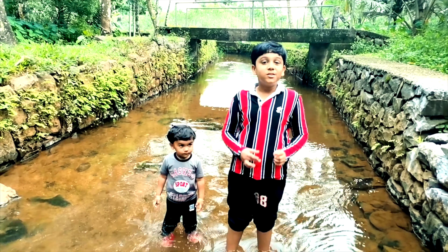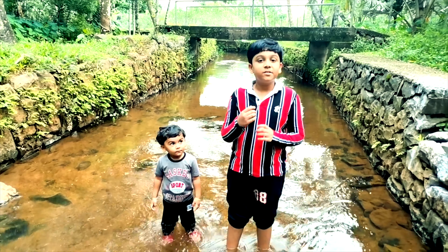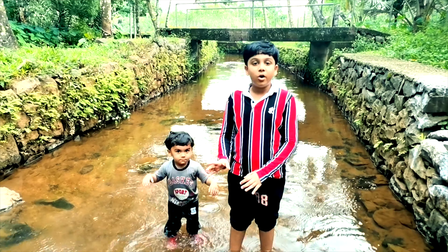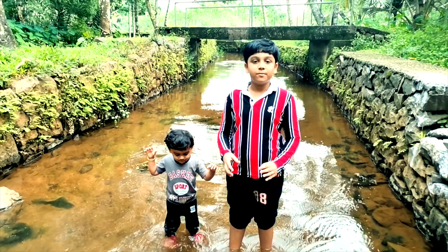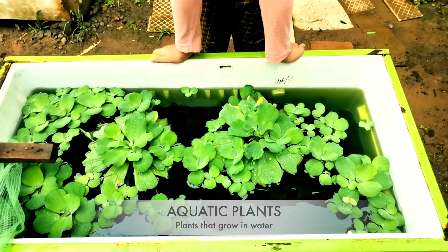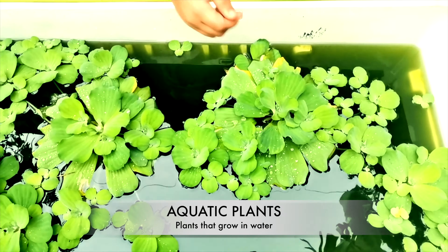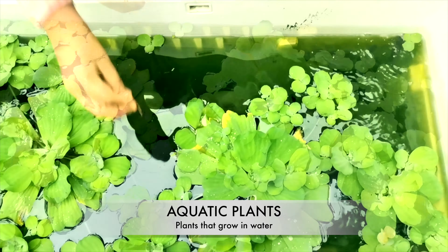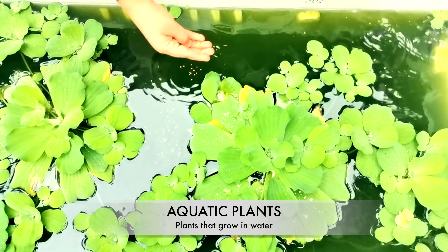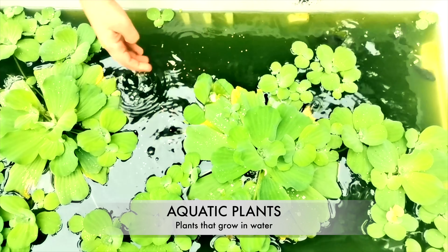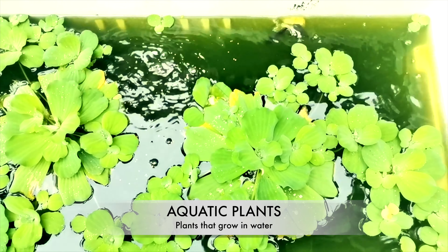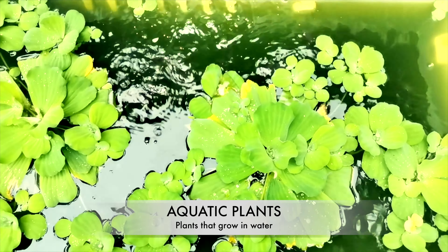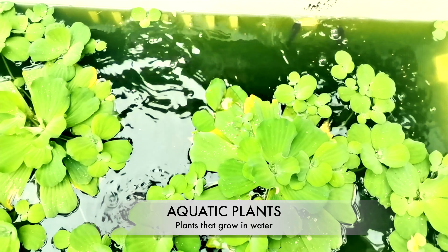All the plants that grow in water are called aquatic plants. This is water lettuce, an example of an aquatic plant. They have lightweight bodies and spongy stems to float on water.